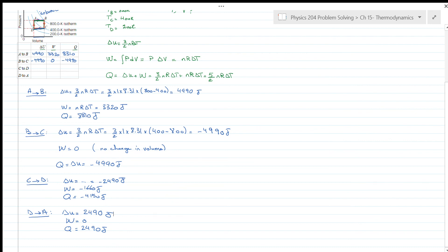We can immediately guess the signs from the graph because we know that when the volume is increasing, the work will be positive. When the temperature is increasing, the change in internal energy will be positive as well. And finally, Q is found from the sum of these two variables.